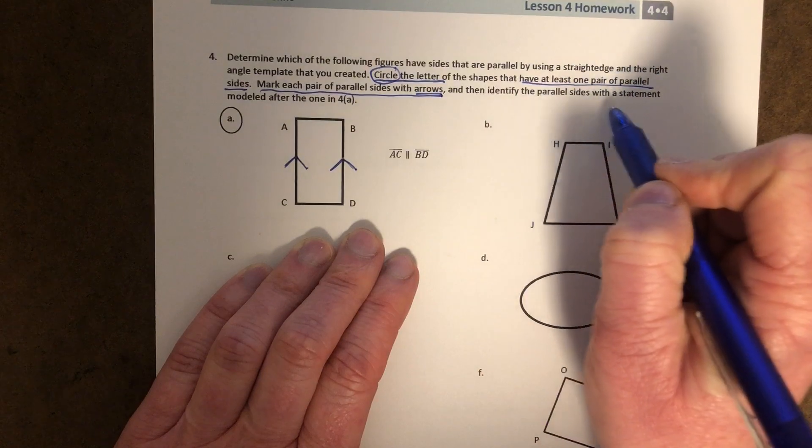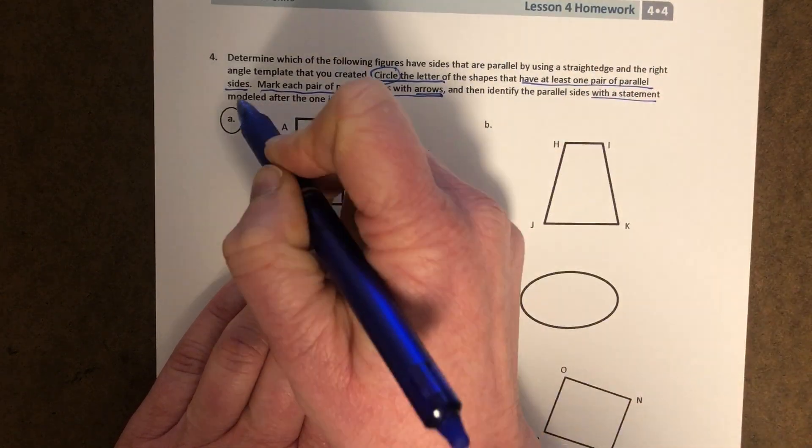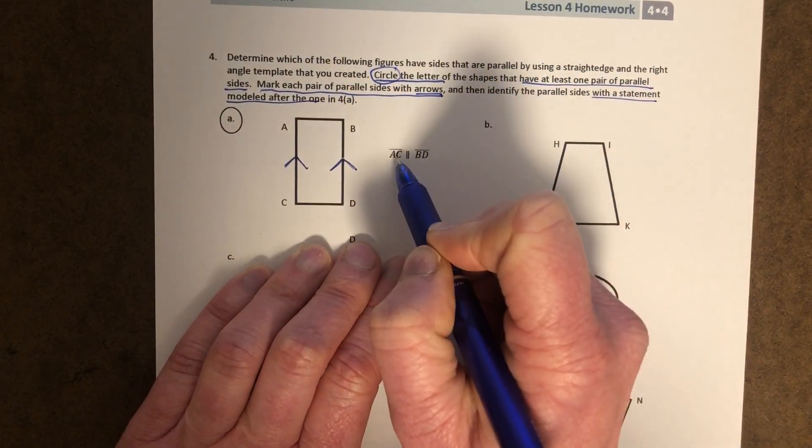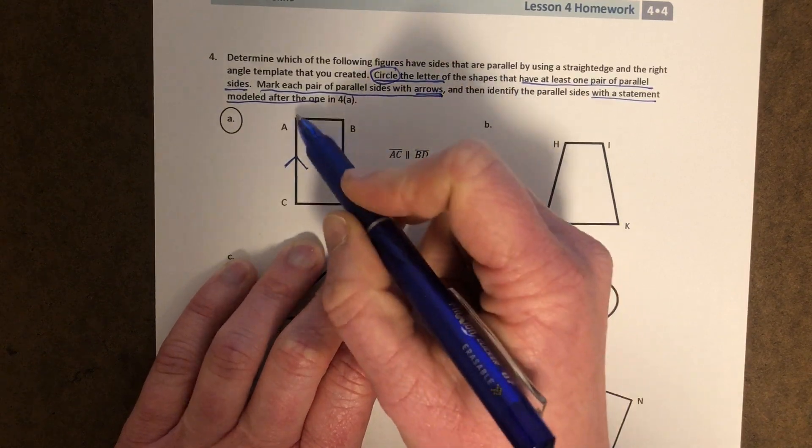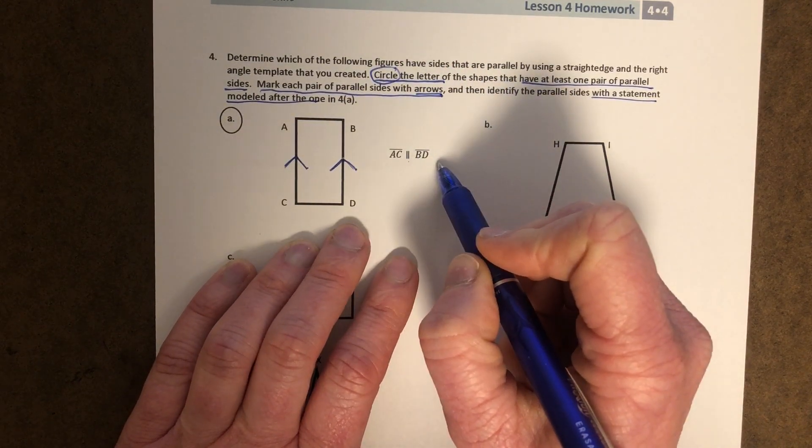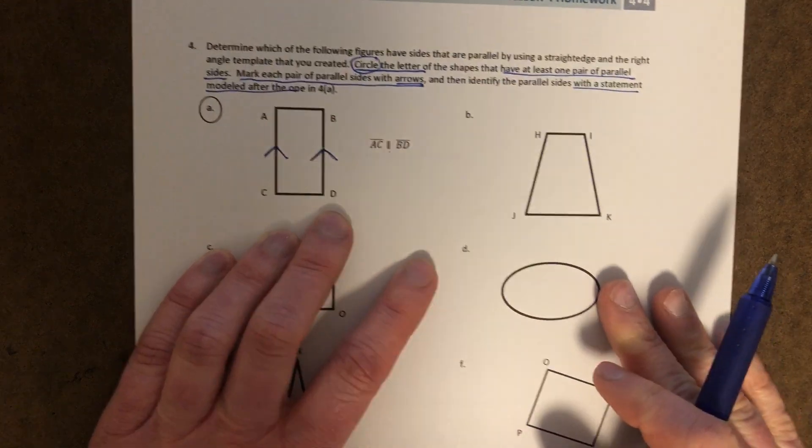And then identify the parallel sides with a statement modeled after the one here. So it says line segment AC is parallel to line segment BD. All right.